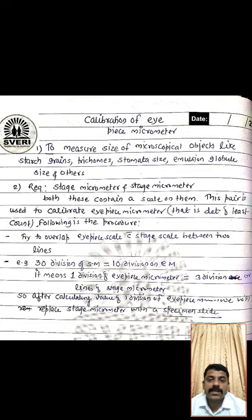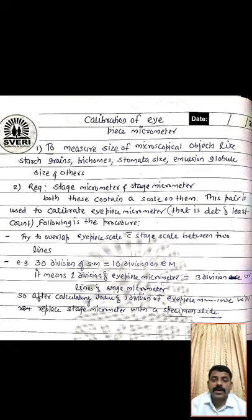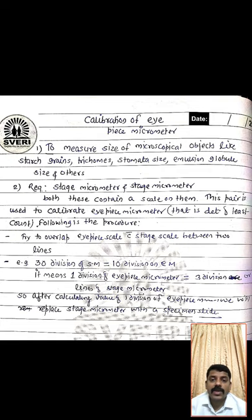Hello friends, today I will talk about how to calibrate an eyepiece micrometer. In pharmacognosy, or in measurement of microscopical objects — for example, to measure the size of stomata, epidermal cells, trichomes, emulsion globules, or suspension particles — we have to use microscopical techniques.